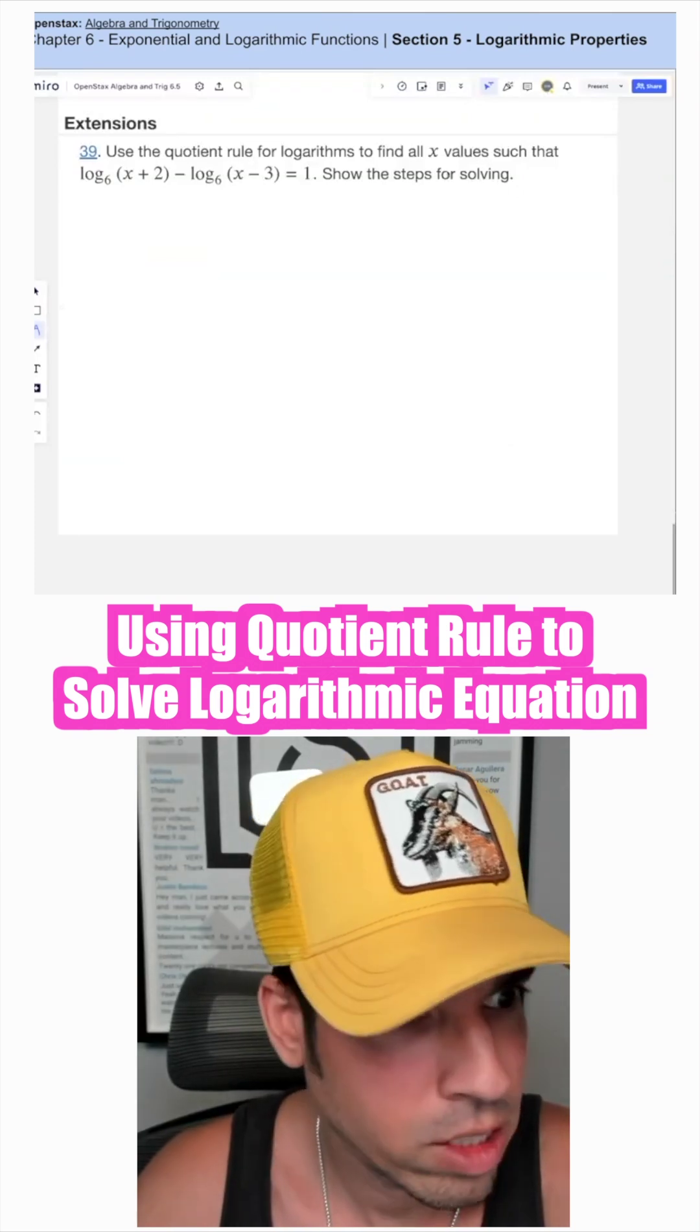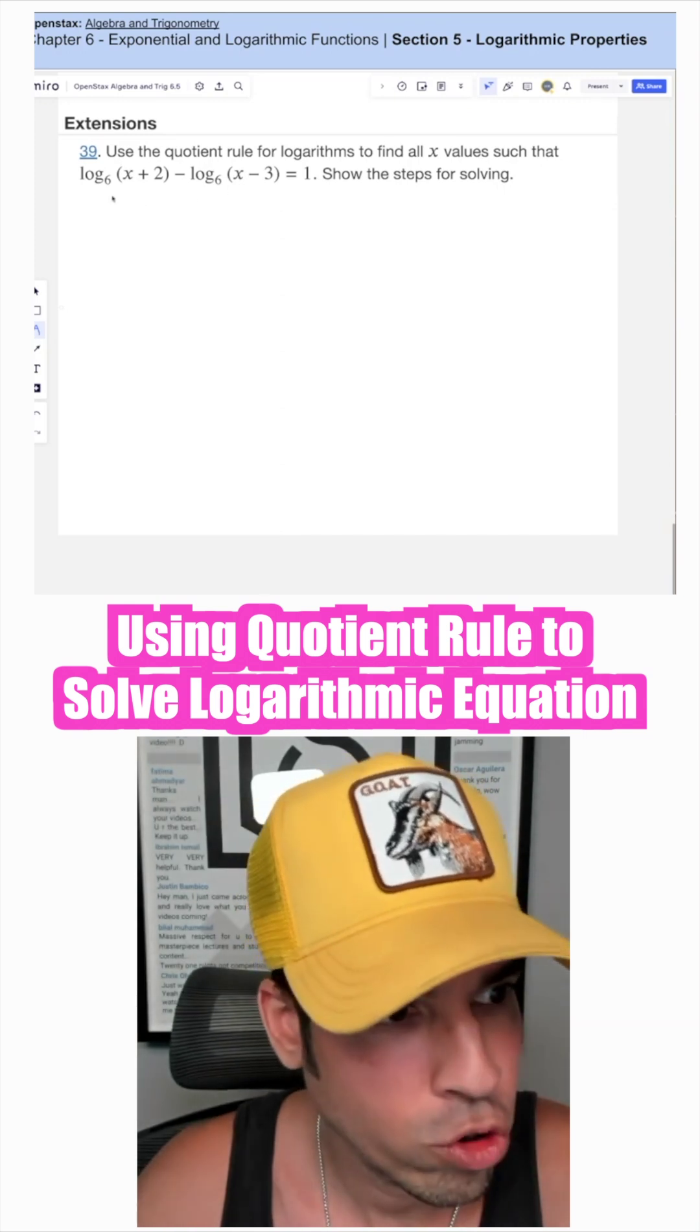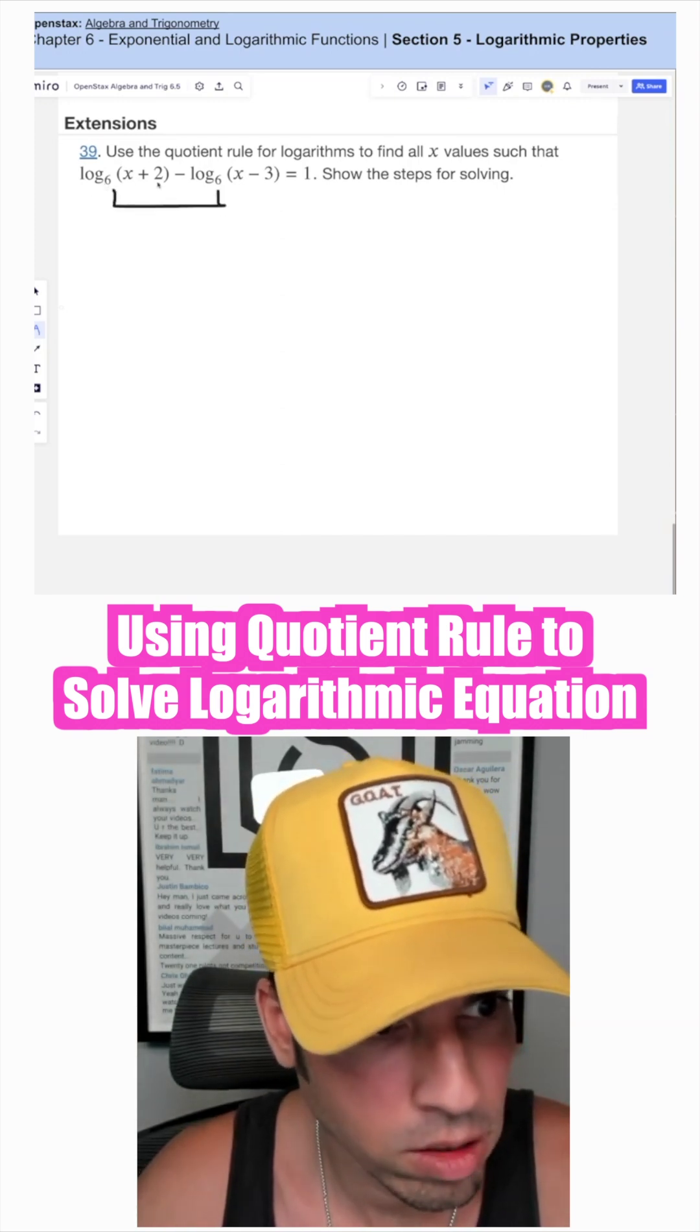This problem says use the quotient rule to find all x values such that this minus this equals one. Using the quotient rule, we know that when we have the same log, log base six and log base six,